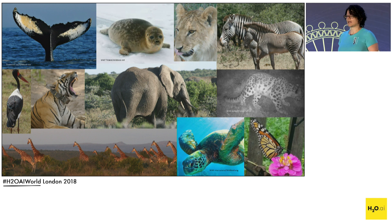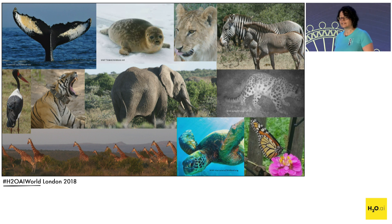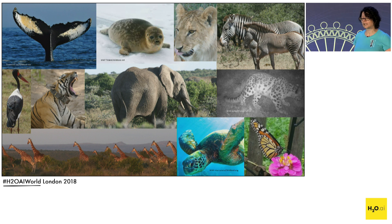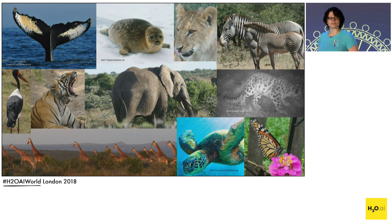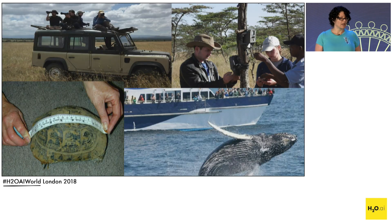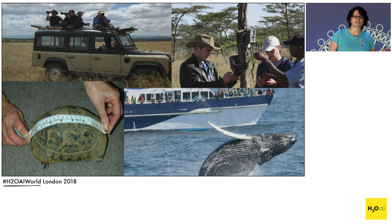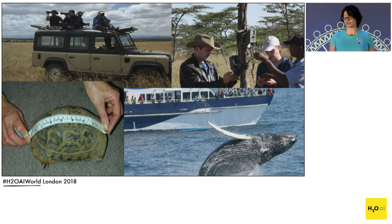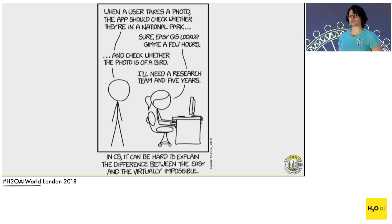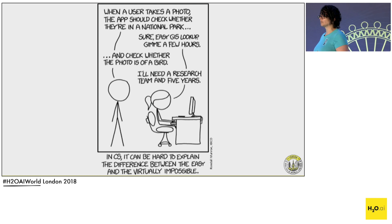Today, images are the most abundant, readily available source of information about anything, from our food to wildlife. These images are taken by scientists, field assistants, camera traps, drones, as well as tourists taking pictures on whale-watching safaris and other tours and posting them on social media. So how can we take those pictures and turn them into information about wildlife?